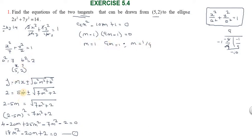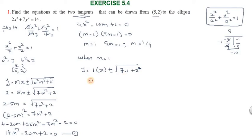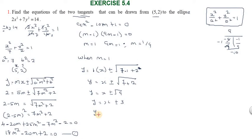Substituting m = 1 into y = mx ± √(a²m² + b²): y = x ± √(7×1 + 2) = x ± √9 = x ± 3. So y = x + 3 or y = x - 3, giving x - y + 3 = 0.